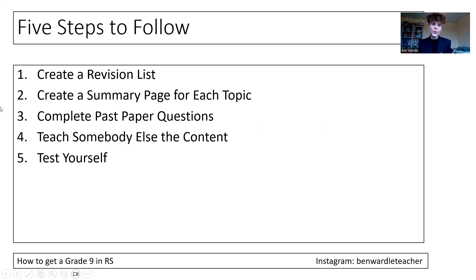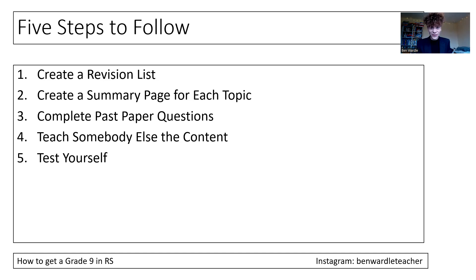In this video I'm going to talk you through my five step programme for GCSE RS revision in order to secure that grade 9. Number one is to create a revision list, number two is to create a summary page for each topic, number three is to complete past paper questions and self-assess them using the exam board mark scheme or submit them to a teacher, number four is to teach somebody else the content, and number five is to test yourself regularly.